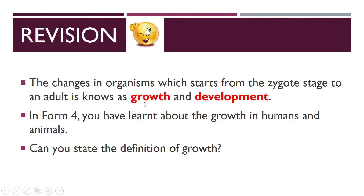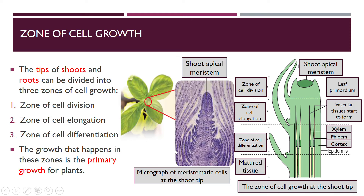The changes in organisms from zygote to adult is known as growth and development. You have learned about it in humans and animals — remember back in Chapter 15. Do you still remember the definition of growth? Now let's focus on looking at the zones involved in cell growth.